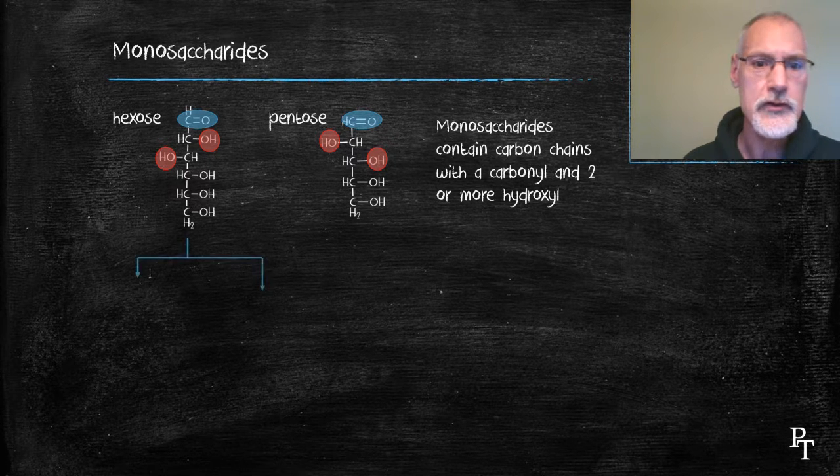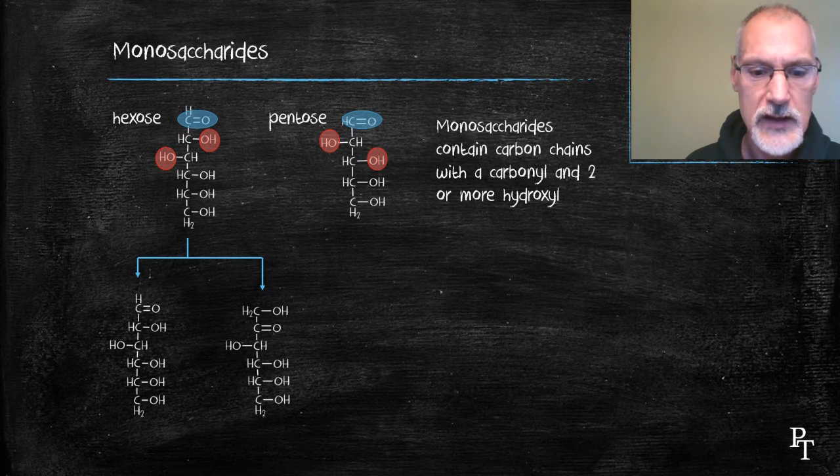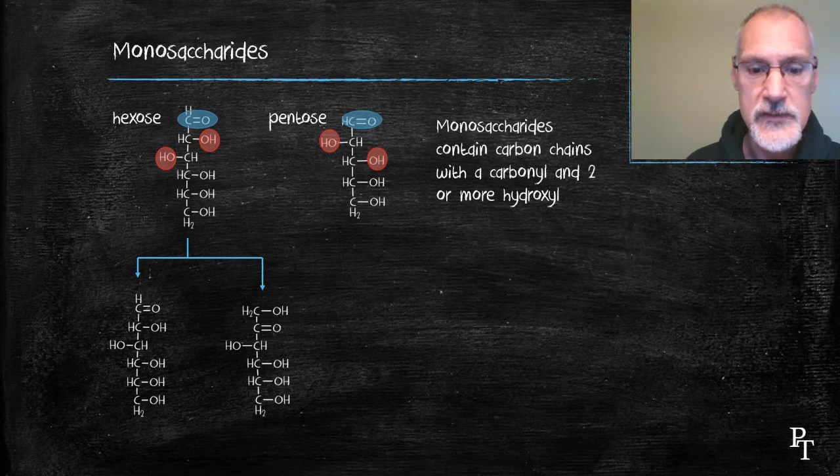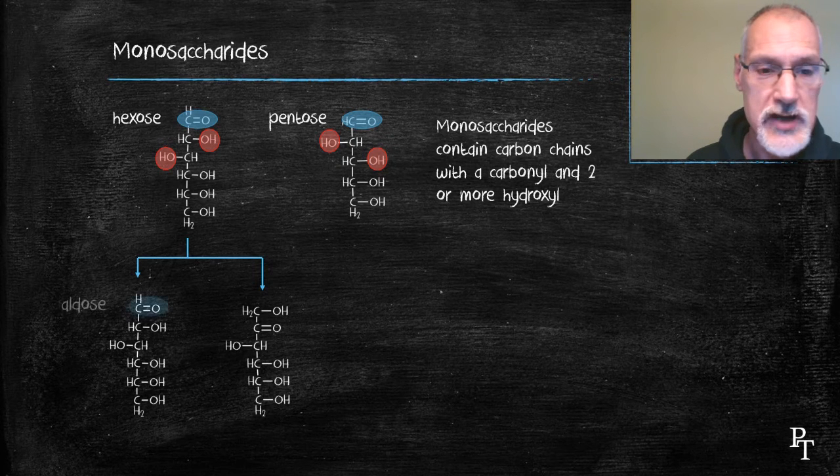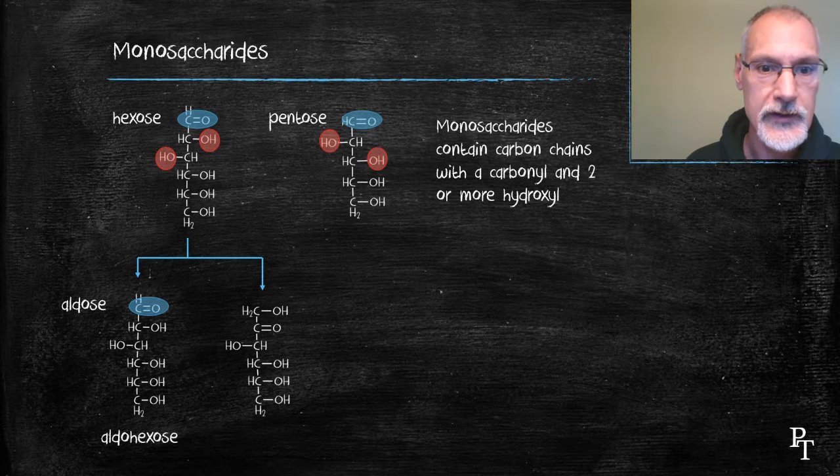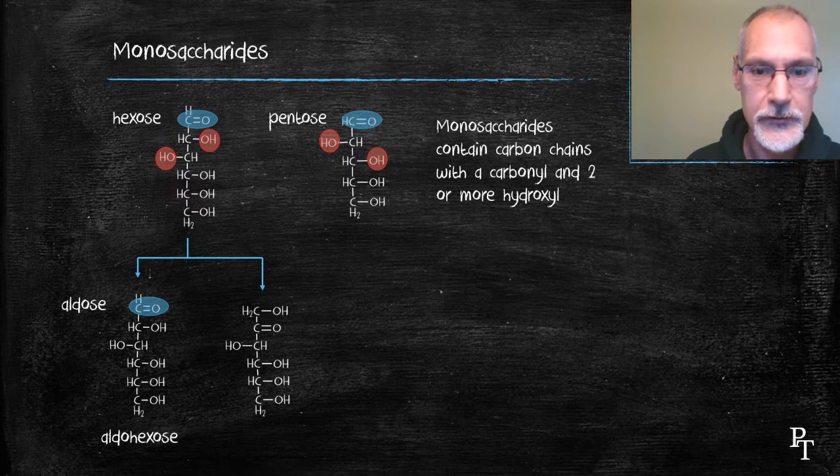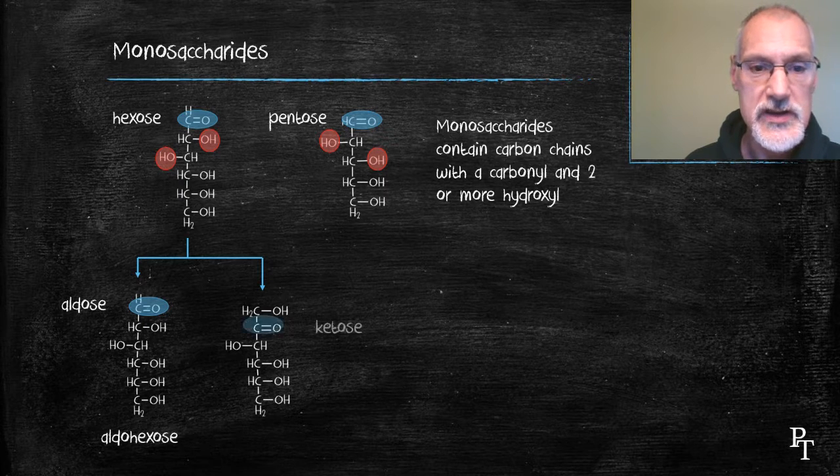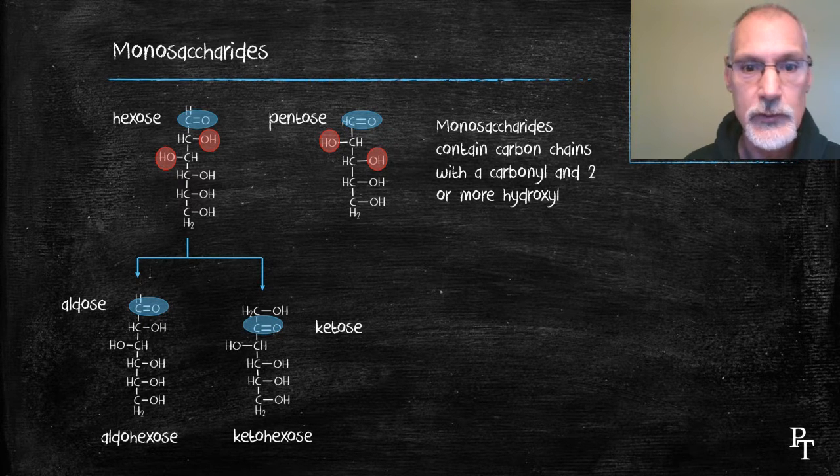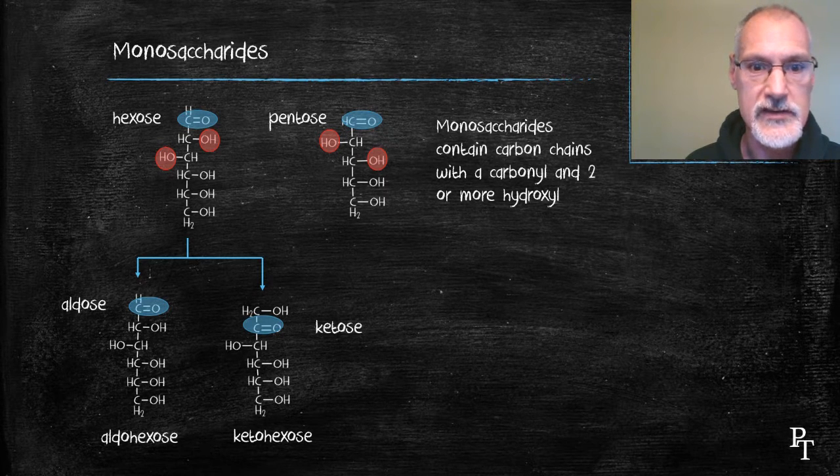They must contain the carbonyl functional group and they also must contain at least two hydroxyl groups. Each of these can be further divided based on the location of the carbonyl group. In our first case, it's attached at the end of the chain, hence we call it an aldose. And being that it's a six carbon chain, we call it an aldohexose. Here we see the location of the carbonyl group inside the carbon chain, a ketone. So we call it a ketose. In this case, a ketohexose because of the six carbon chain.